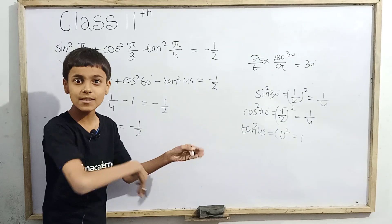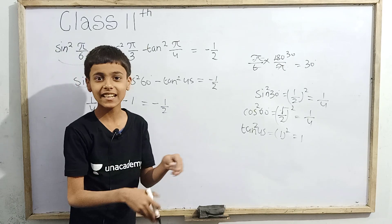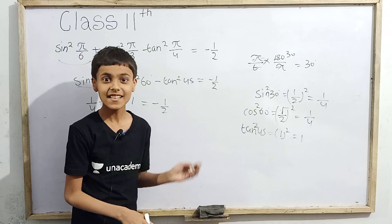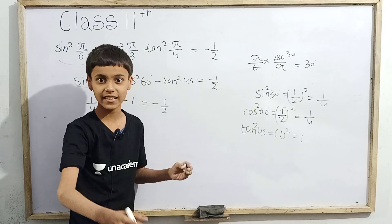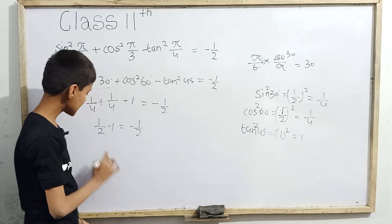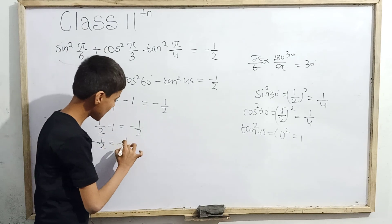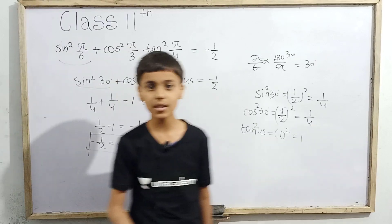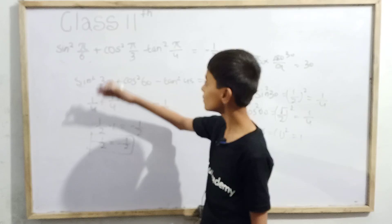If you want, you can take LCM, or directly compute 1/2 − 1 = -1/2. So -1/2 = -1/2. That's the correct answer and that's how we can prove this kind of question.